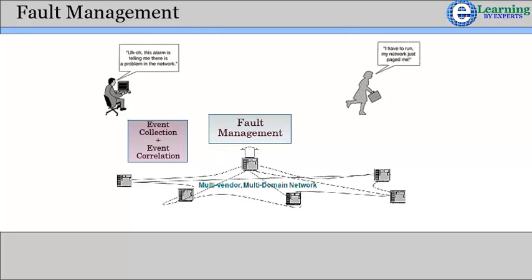It correlates events with various data and enriches them with additional information — for example, location, service, customer, etc. It helps an operator in identifying, diagnosing, and escalating problems occurring in their network, consisting of heterogeneous devices, applications, and databases.